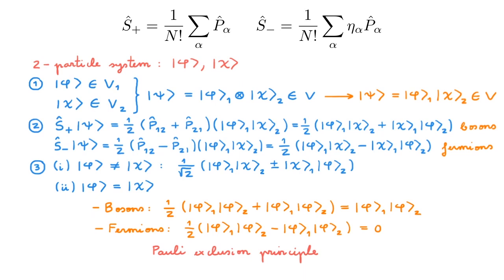I bet you have all heard before about the Pauli Exclusion Principle, which is an extremely famous result. It features in many areas — for example in atomic structure, where it tells us how to arrange electrons in atoms and gives rise to the structure of the periodic table of elements.